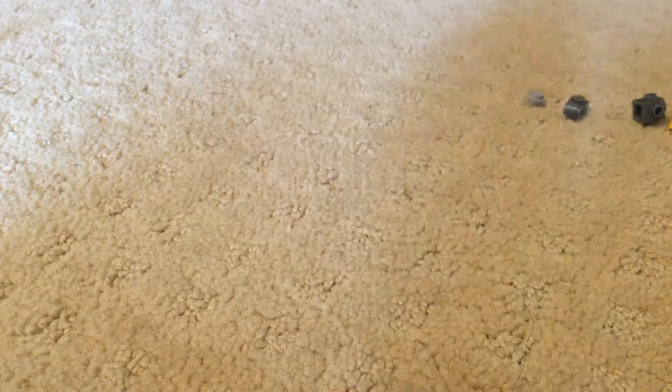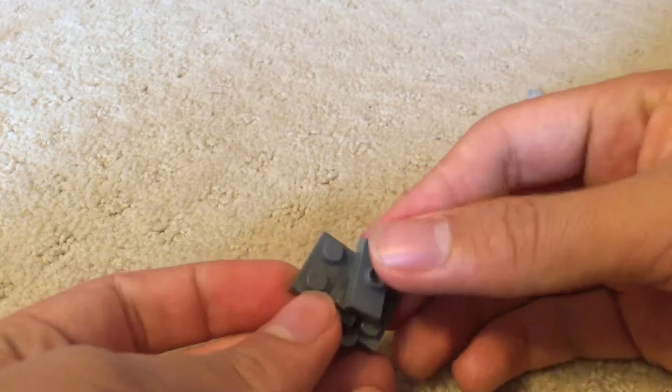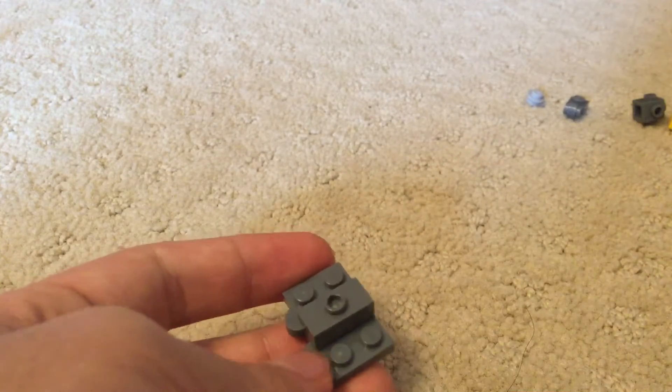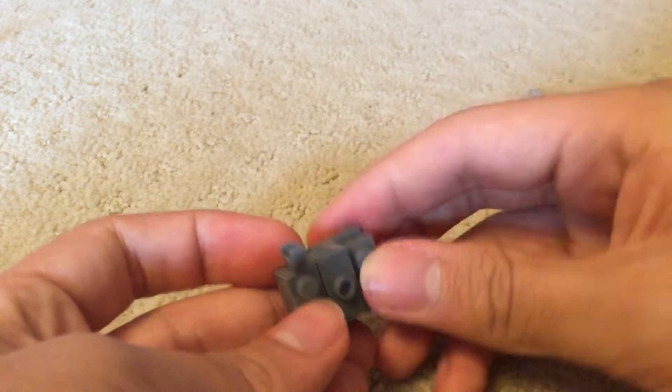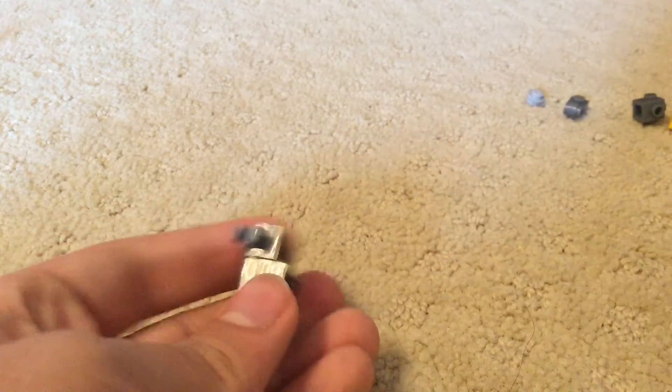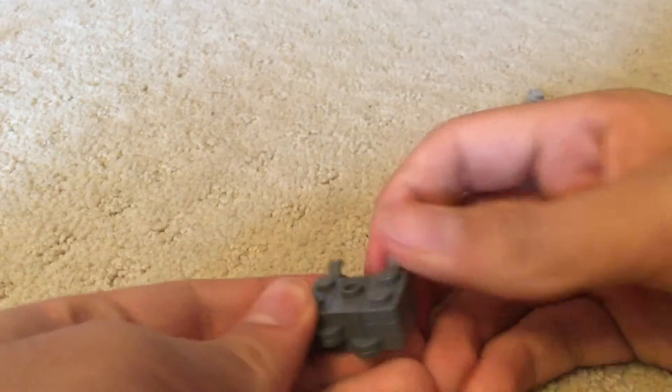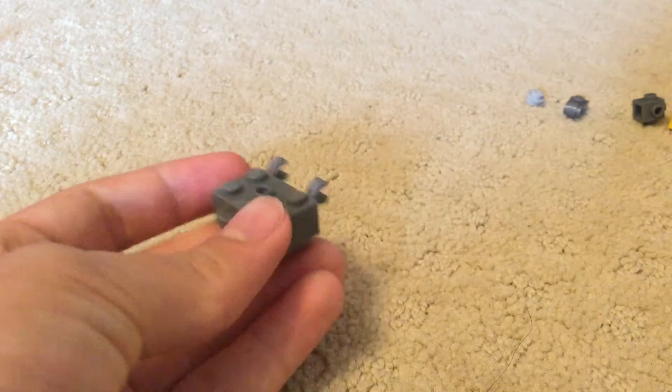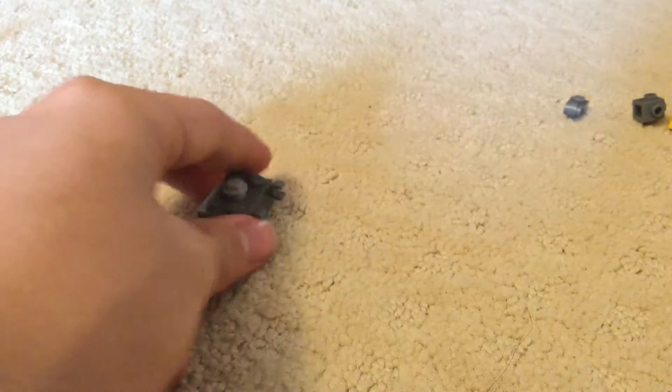First you're going to take your two things and add it like this. Now take your jumper plate and add it to here. Take two 1x2 things with the clip and add this here and then this here. Here is your little base thing. Now add a 1x1 on top right here.